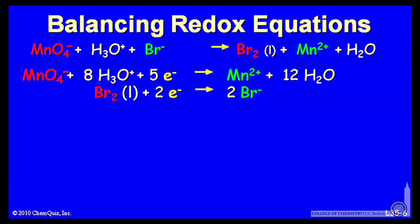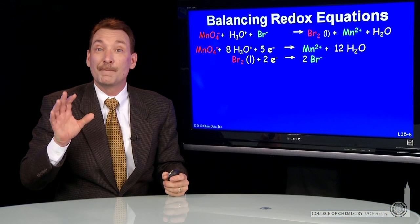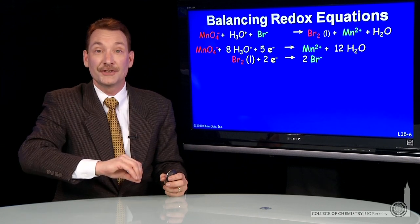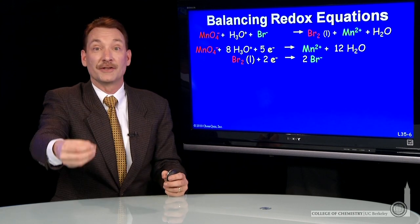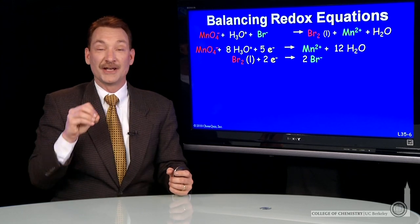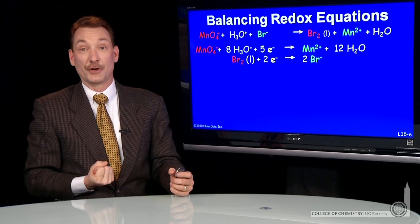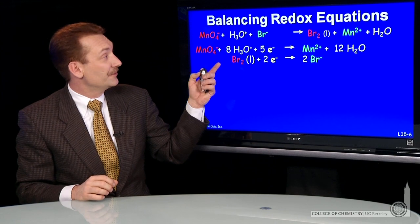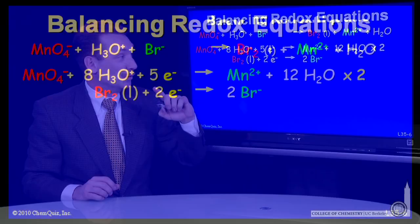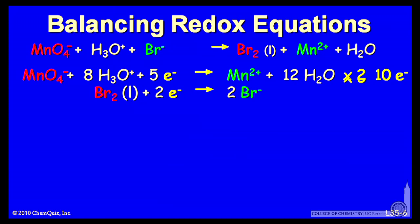This is a five electron transfer and this is a two electron transfer. So we can balance the number of electrons. Whenever oxidation and reduction occurs, of course the number of electrons are conserved. If I reduce you by two electrons, I must accept those two electrons. So here I'm going to multiply the top by two to get to a 10 electron transfer and the bottom by five. So I have 10 electron transfers in both cases.